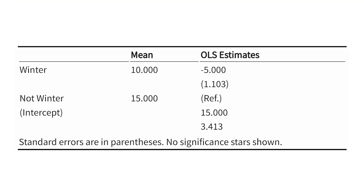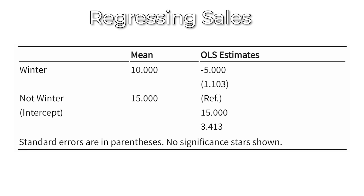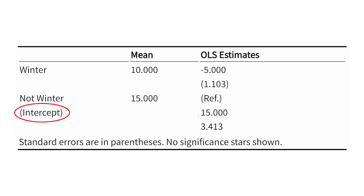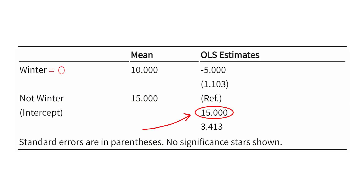We can see that in action with an example. Here I'm regressing sales on whether it is currently winter or not. Let's say that your sales on average happen to be 10 when it's winter and 15 when it is not winter. If we did an ordinary least squares regression of sales on this binary predictor, I would get a coefficient of negative 5 on winter because the average sales in winter is 5 lower than in not-winter. For the intercept, I would get a coefficient of 15 because that is the average for not-winter. The intercept tells me what the average for not-winter is, and then the coefficient gives me the difference between winter and not-winter — the coefficient on winter relative to this reference group of not-winter.